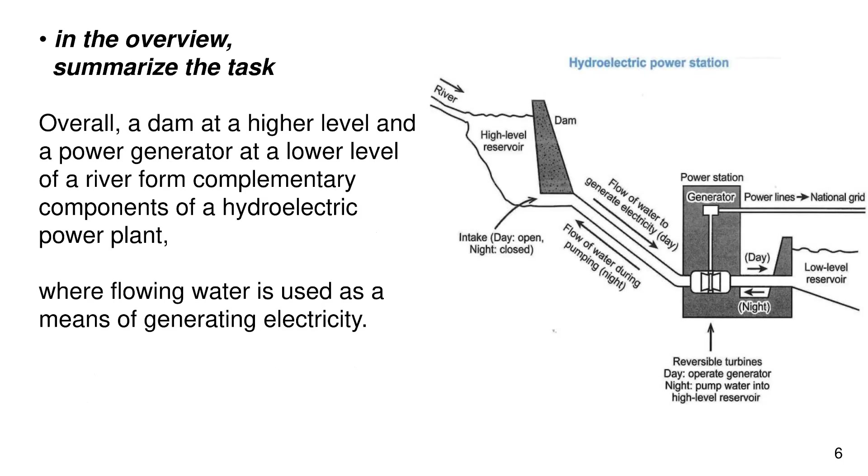In the overview, summarize the essay. Overall, a dam at a higher level and a power generator at a lower level of a river form complementary components of a hydroelectric power plant, where flowing water is used as a means of generating electricity.